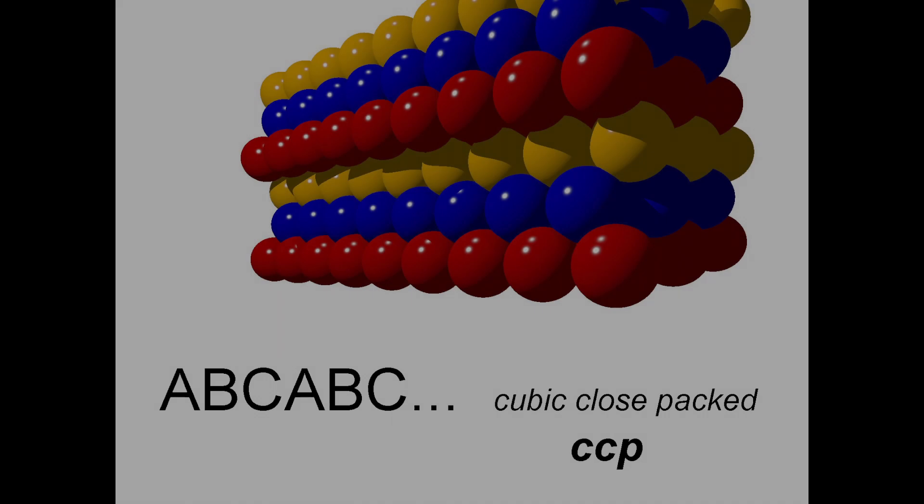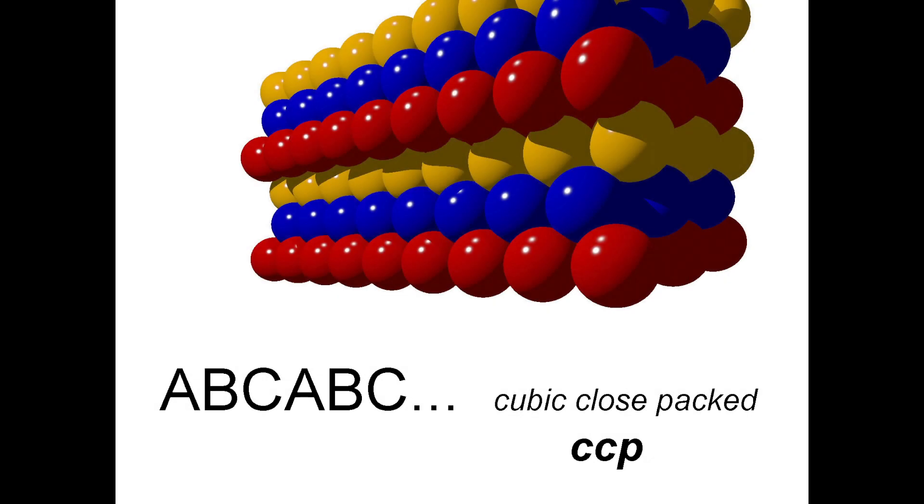Now let's look at cubic close pack structures in the same way. Remember that the close packed layers in a cubic close pack structure are assembled in a way that can be defined as ABCABC.